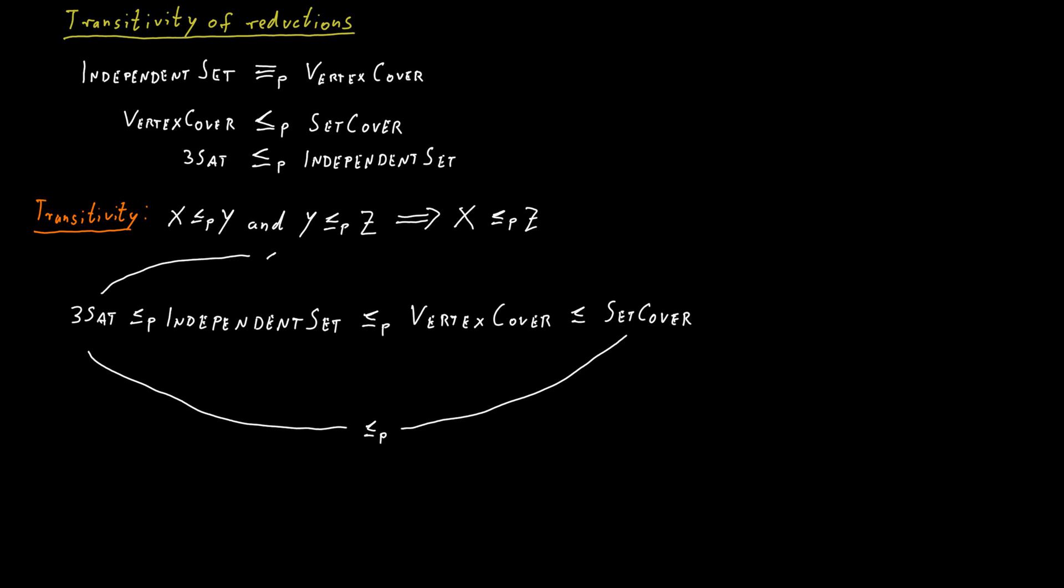We also know that 3-SAT polynomial time Karp reduces to vertex cover. And we know that independent set polynomial time Karp reduces to set cover. So we get a whole bunch of new results. And this is why reductions are useful, because we can exploit this transitivity property to save ourselves a lot of work in proving new things.